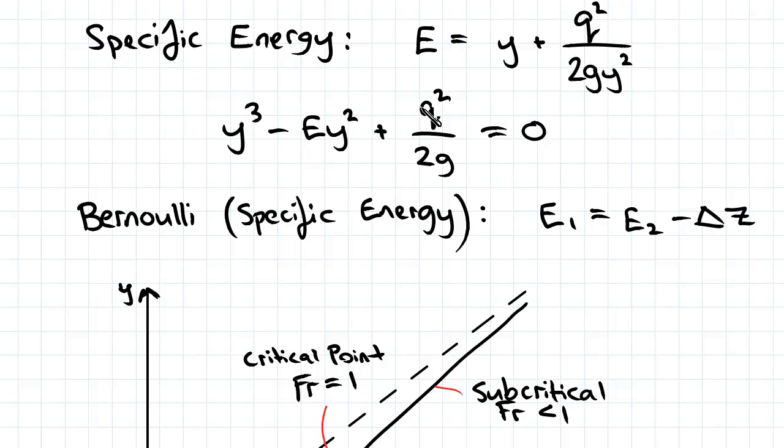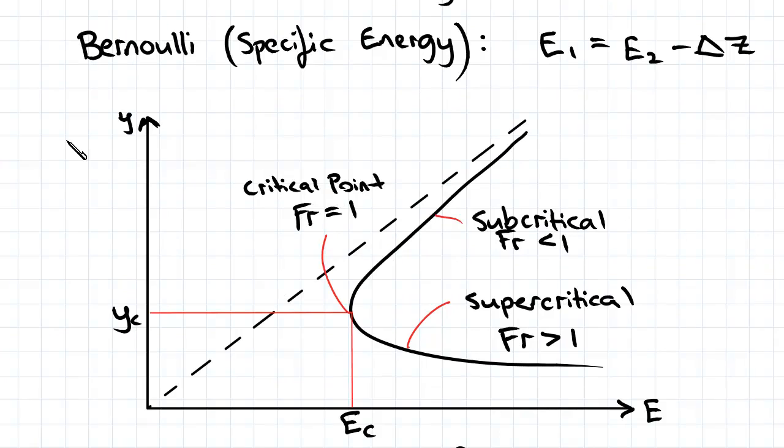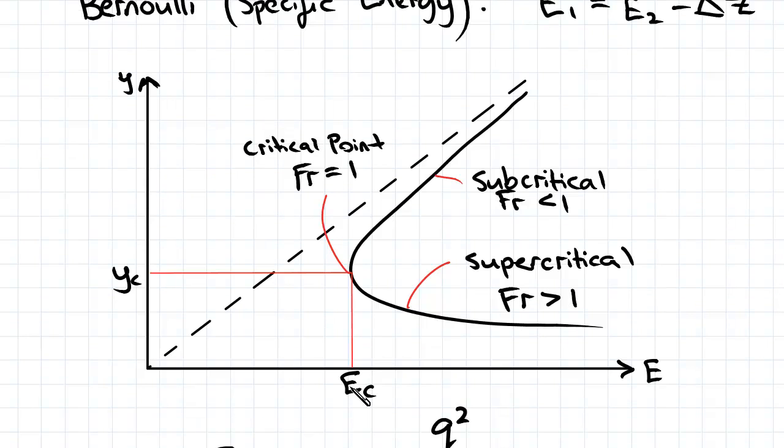So if you remember from the previous video we found that for a critical flow Fr is equal to 1 and on our specific energy curve there was only one point that was critical and that was the one on the end here.